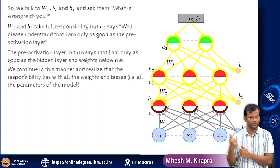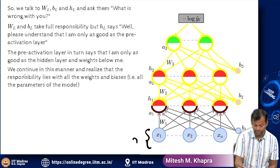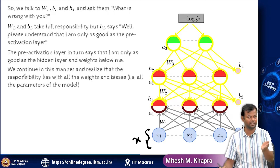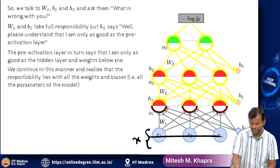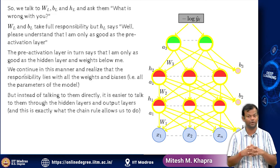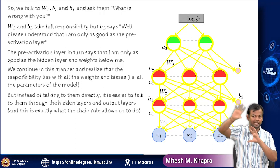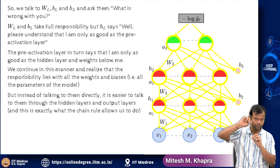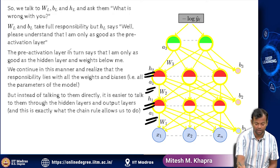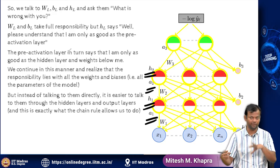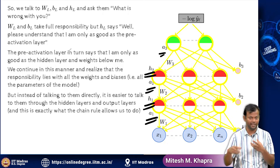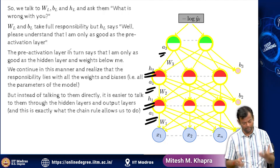And of course you cannot pass the responsibility to the input — the input is whatever it is. You cannot say: change your input if you want the right output — no, I have given you a certain input, I expect you to give me the output. So the responsibility never goes to the input. What you realize is that in the entire network, the responsibility lies with all the weights — all the yellow things shown here — all the weights and all the biases. Although the hidden activations are being computed, they are just a function of the weights and the biases. So if the weights and biases are wrong, then these guys are going to be wrong, and this argument flows all through the network.